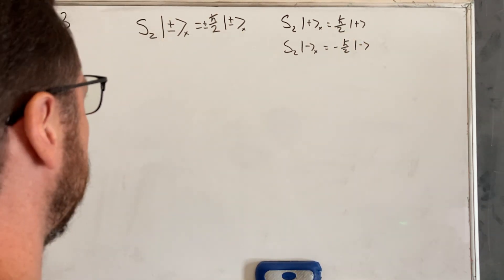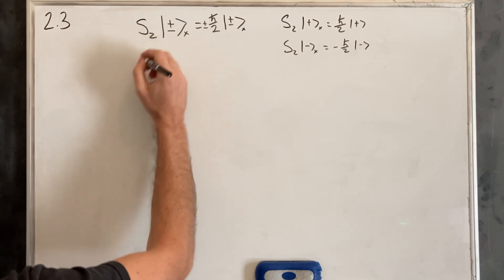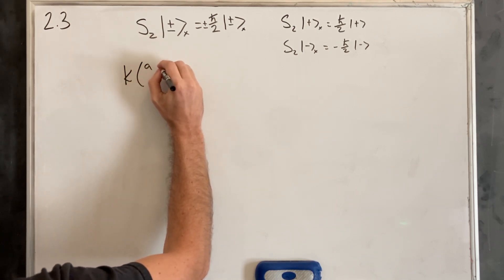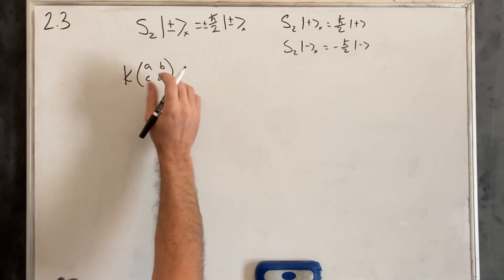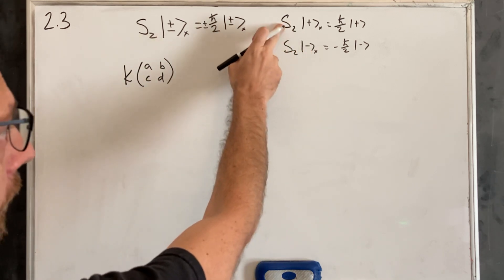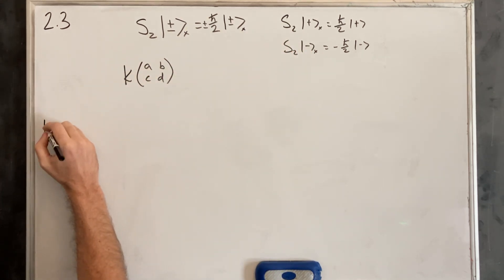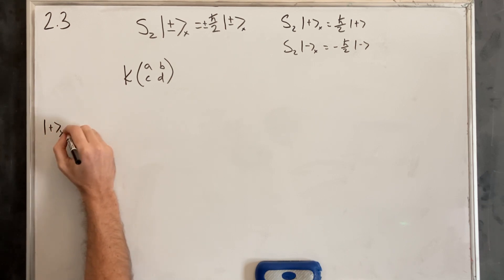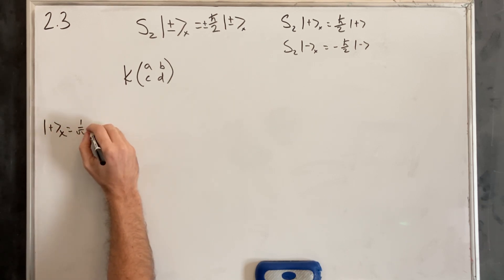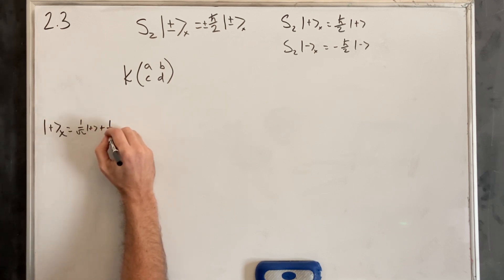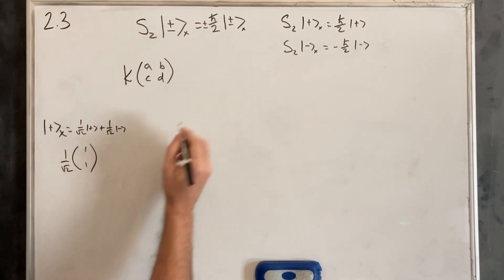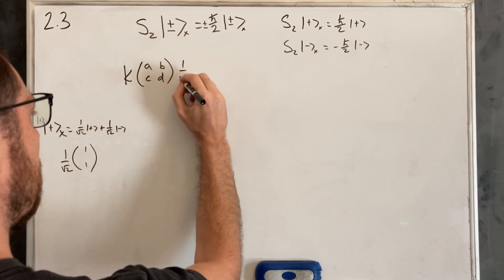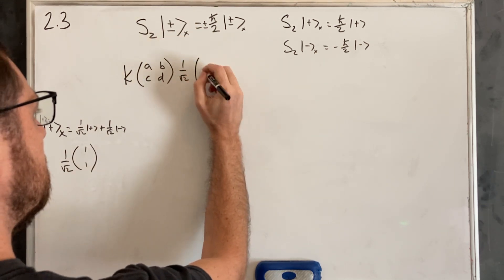We'll do it the same way as before. We'll assume S_z has the form of K times a 2×2 matrix with entries A, B, C, D. Then we apply that to the spin-up X state. Remember, |+x⟩ equals (1/√2)|+z⟩ + (1/√2)|−z⟩, which in matrix form, pulling out the 1/√2, gives the column vector [1, 1].